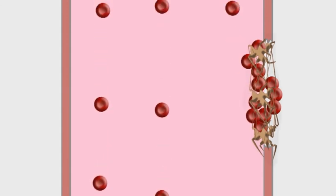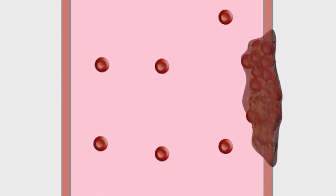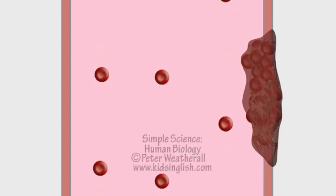As this dries and hardens, it forms a clot or scab that plugs the wound and stops the bleeding.